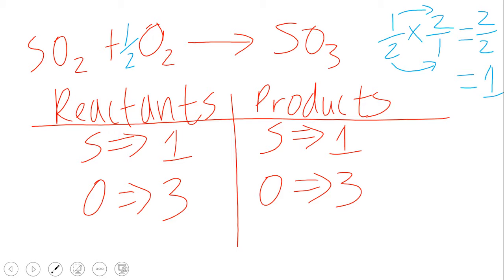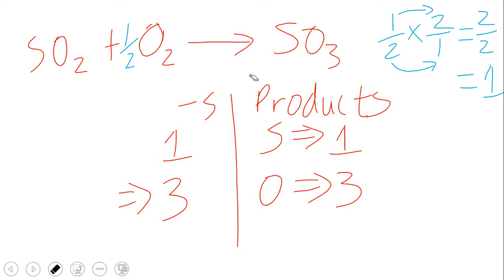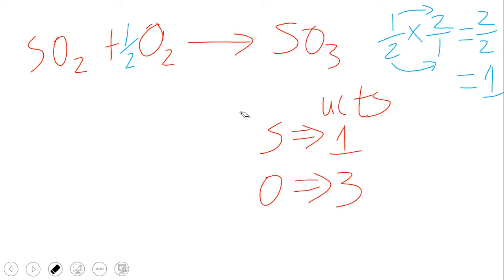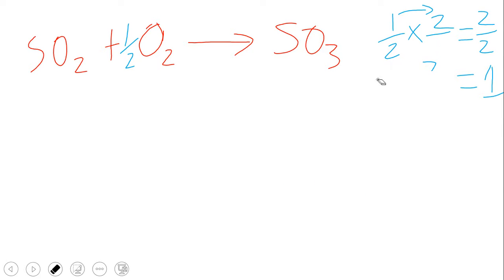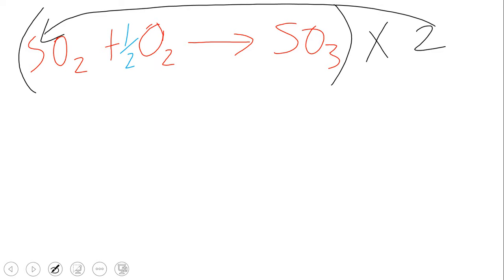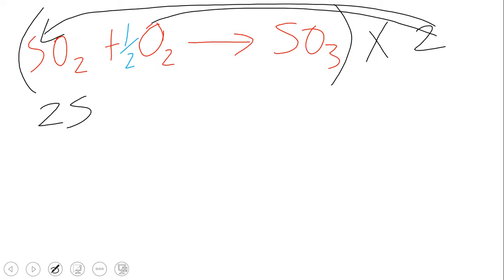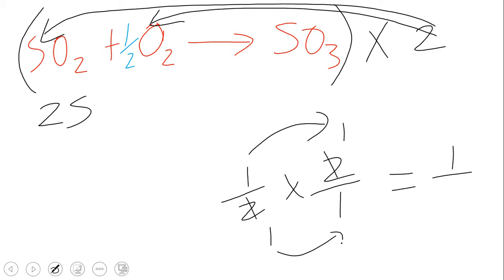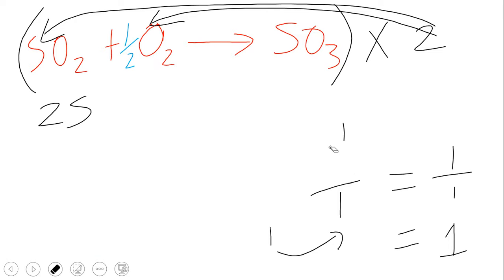But we do not want to leave a fraction in our chemical equations. So let's multiply the entire equation by two. We'll have 2SO₂ plus — the half times two cancels, leaving one times one over one, which equals one — so just O₂. All we need to put is O₂.